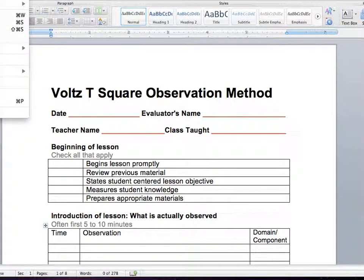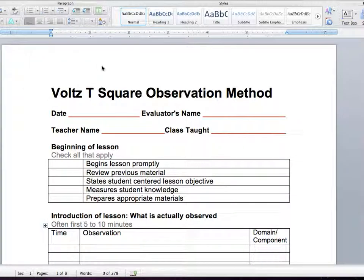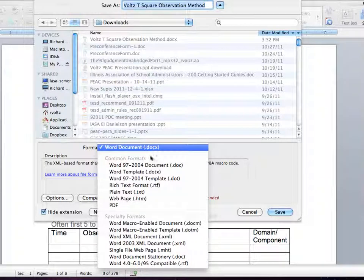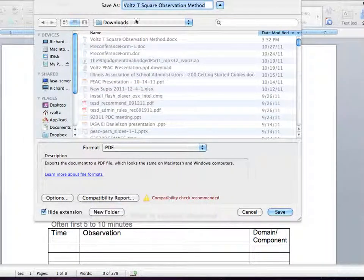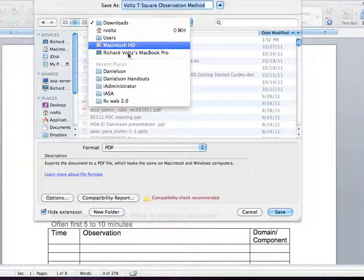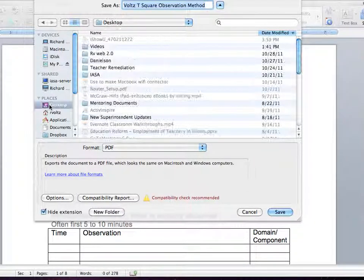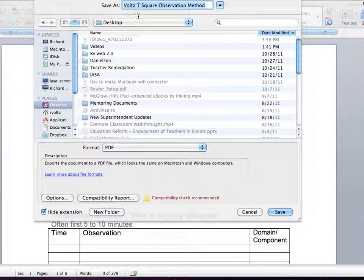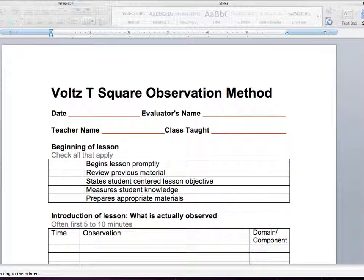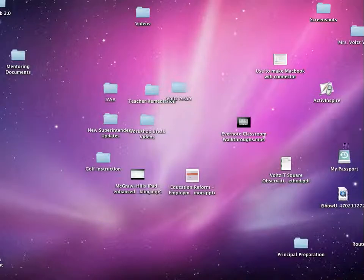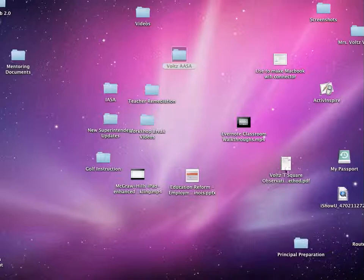You're going to make this form in Word or Pages, and then you're going to save it as a PDF. In this case, I'm going to save it to my desktop. It's going to be called Voltz T-Square Observation Method. Now if we go back to my desktop, we will find that I have saved that file as Voltz T-Square. You can see I have saved this file on my desktop.